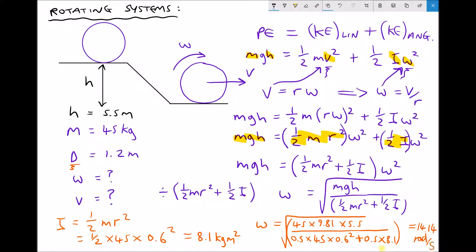We have one final step to calculate the linear velocity of the drum. All we need to do is go back to our original second equation, V equals r omega, and plug in our values for r and omega. So we have V equals the radius of the drum 0.6 times omega 14.14, giving us a linear velocity of the drum equal to 8.48 meters per second.